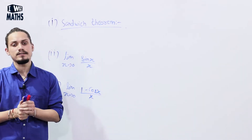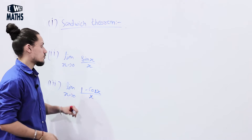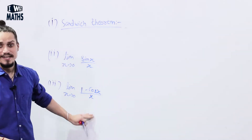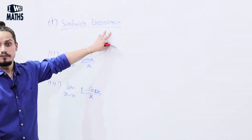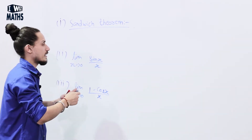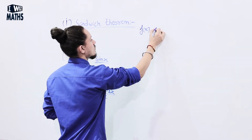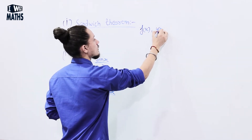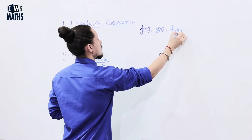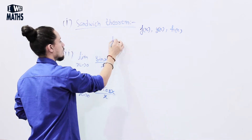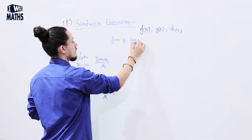Now we'll try to find limits of some trigonometric functions. For that you should know three expressions. First one is the sandwich theorem: if we have three functions f(x), g(x), and h(x) such that f(x) ≤ g(x) ≤ h(x),